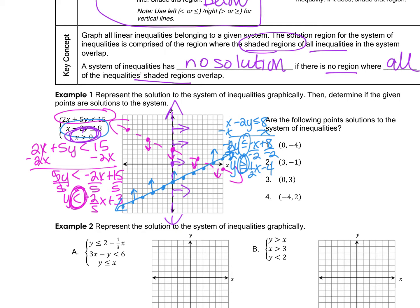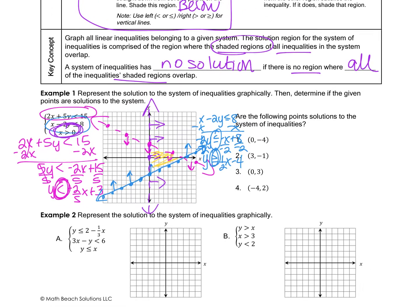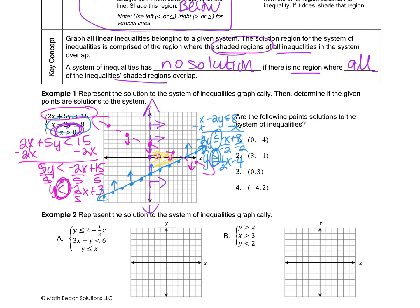The solution is any point in the triple-shaded area. Testing the points: (0, -4) is on the blue line, but the purple line is dotted — dotted means not included — so that is not a solution. (3, -1) falls right in the triple-shaded area, so that is a solution.